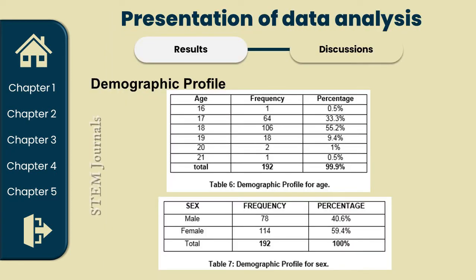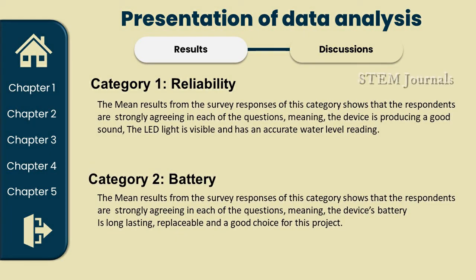In the presentation of data analysis, Category 1: Reliability. The main results from the survey responses show that respondents strongly agree on each question, meaning the device produces a good sound, the LED light is visible, and it has accurate water level reading. The survey shows respondents are mostly strongly agreeing, meaning the devices function correctly and are reliable. Based on the gathered data, our prototype is reliable and can be an alternative to detect rising water, helping people near flooded areas.